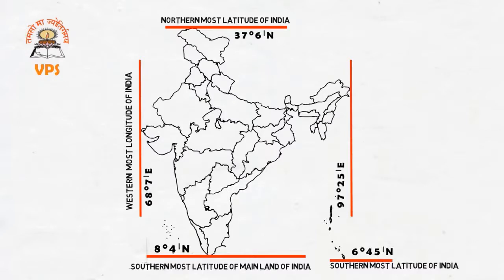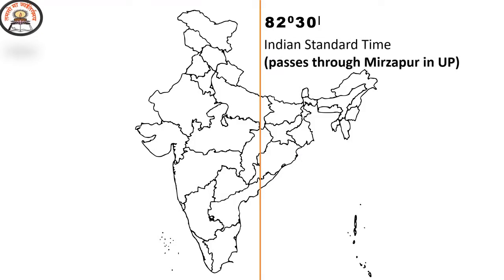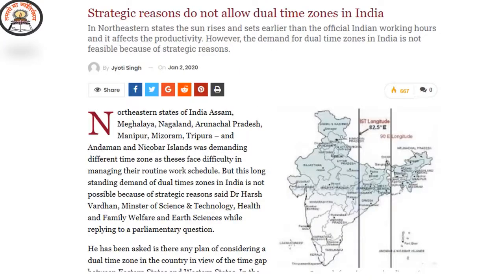This creates a problem: if the local time in Arunachal Pradesh is 7 AM, it is still 5 AM in Gujarat. How is this problem overcome? The mid-longitude of India is 82 degrees 30 minutes. The time on this longitude is taken as the standard time of India — the Indian Standard Time. Everybody in India, irrespective of where they live, follows this time. Bigger countries like the USA, Canada, and Australia have many time zones. Notably, the northeastern states of India had been demanding a separate time zone for long, but their demand was turned down by the union government only recently.